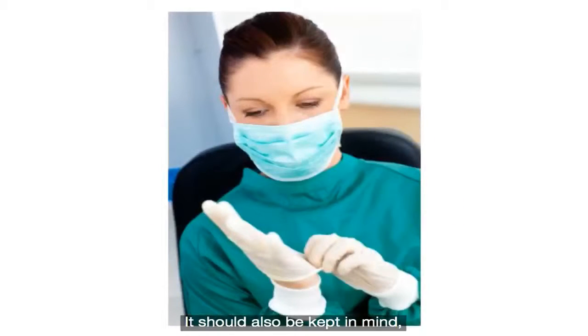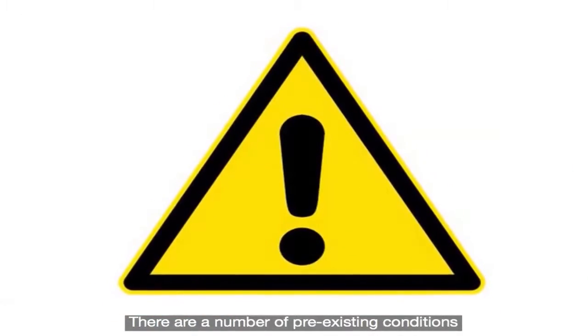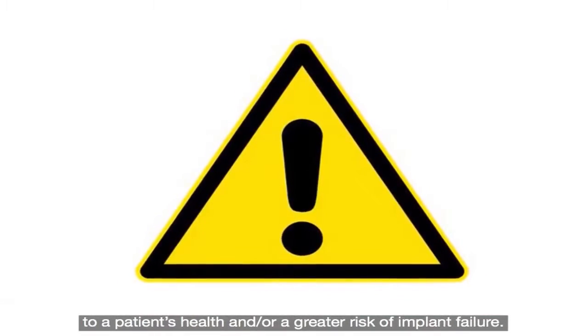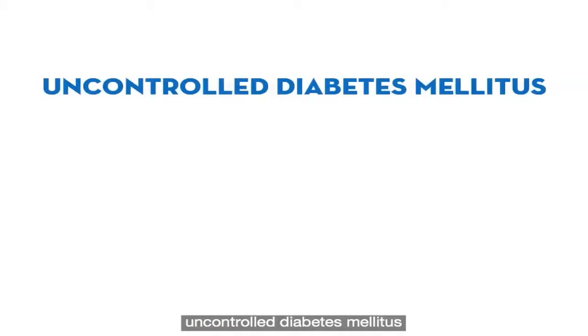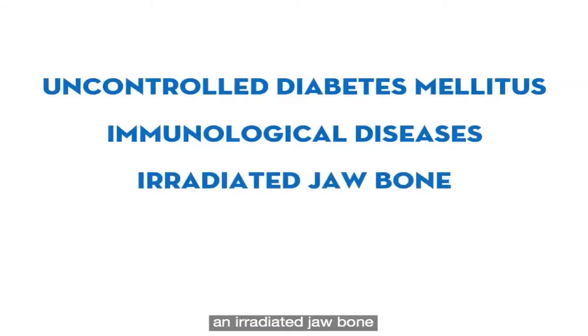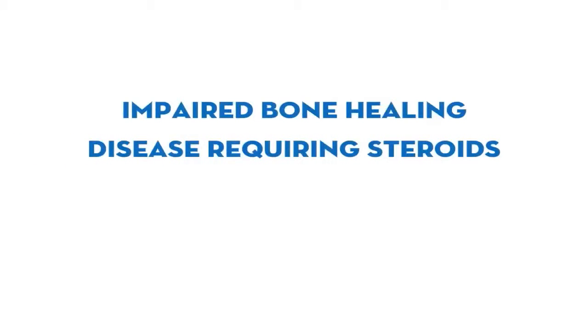Every implant placement requires a surgical procedure. There are a number of pre-existing conditions where implant surgery can result in an increased risk to a patient's health and/or a greater risk of implant failure. These conditions include uncontrolled diabetes mellitus, immunological diseases, an irradiated jawbone, impaired bone healing due to severe bone diseases, and a disease requiring continuous medication with steroids.